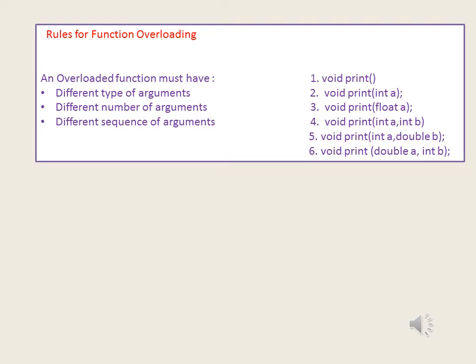For the sequence of arguments, we have examples five and six. In both cases we are passing two arguments — one integer and one double — but if we observe cases five and six, the sequence, that is the order, in which the arguments are passed is swapped. In case five, first is int and then double. In case six, first is double and then integer.